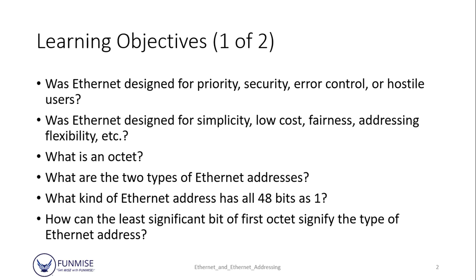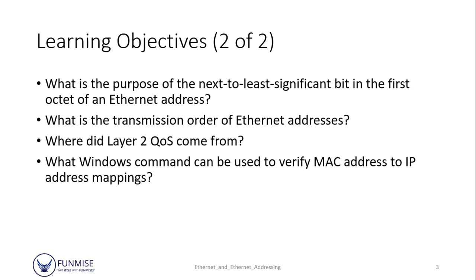What are the two types of Ethernet addresses? What kind of Ethernet address has all 48 bits set to one? How can the least significant bit of the first octet signify the type of Ethernet address? What is the purpose of the next-to-least significant bit in the first octet of an Ethernet address? What is the transmission order of Ethernet addresses? Where did Layer 2 QoS come from? And finally, what Windows commands can be used to verify MAC address to IP address mapping?